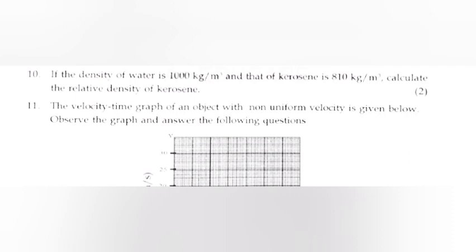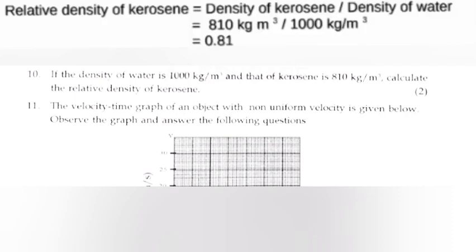Question 10: If the density of water is 1000 kg/m³ and that of kerosene is 810 kg/m³, calculate the relative density of kerosene. Answer: relative density of kerosene equals density of kerosene divided by density of water equals 810 kg/m³ divided by 1000 kg/m³ equals 0.81.